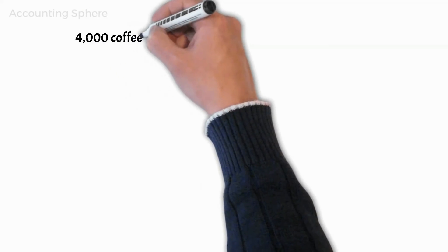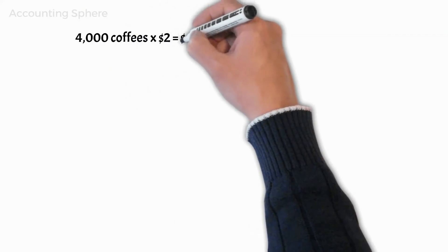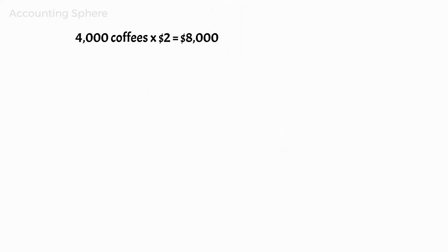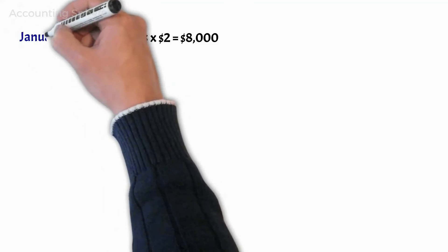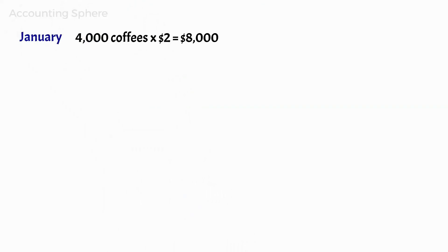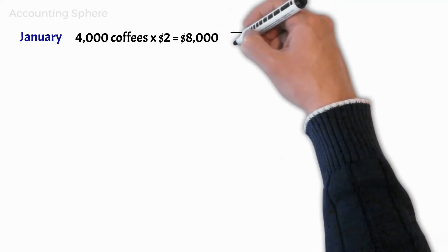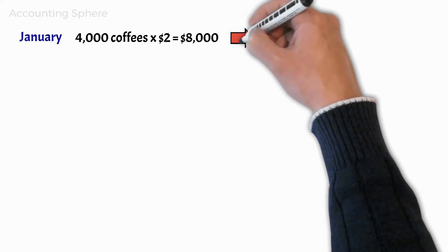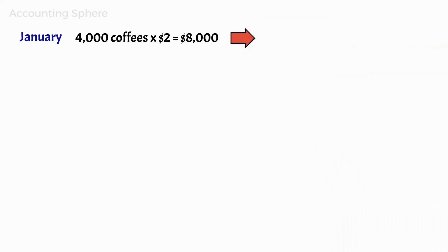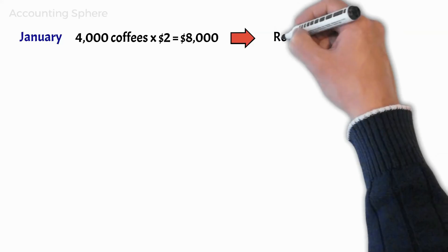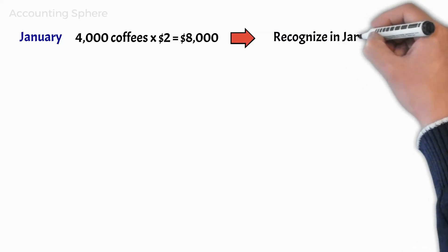For example, if Michael sells 4,000 coffees for $2 each in January, he has actually earned $8,000 in fees for that month. As coffees are paid by his clients at the time of order, Coffee & Go Sweet will recognize the $8,000 in January.